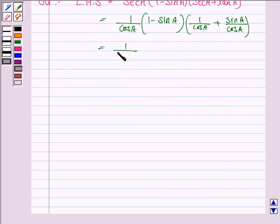Again this is equal to 1 upon cos A into 1 minus sine A. Taking LCM here we have cos A, the LCM will be cos A. So in the numerator we have 1 plus sine A.